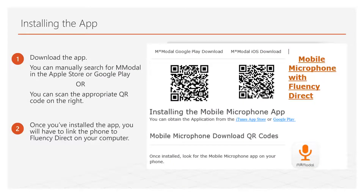This slide shows two QR codes, one for Android phones and the other for iPhones. Simply open the camera on your phone and point it at the appropriate code. Do not take a picture — your phone will automatically read the QR code. When a small tab pops up on your screen, click it to go to the app. If the QR codes do not take you to the app, go to your app store, search M-Modal, and install the 3M mobile microphone. The app icon is an orange microphone.